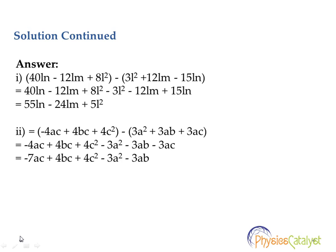Subtraction changes the sign when opening the bracket: 40ln-12lm+8l²-3l²-12lm+15ln. Adding the individual terms, we get 55ln-24lm+5l².